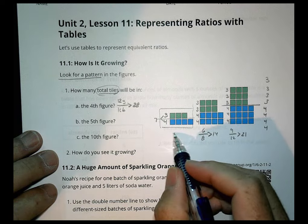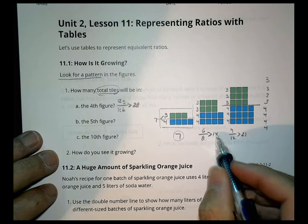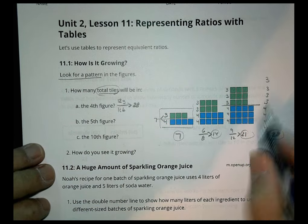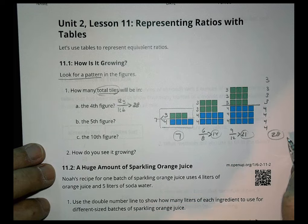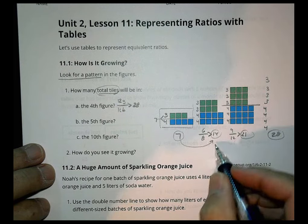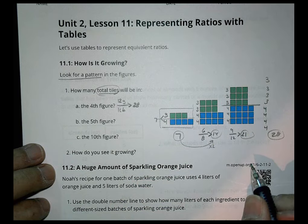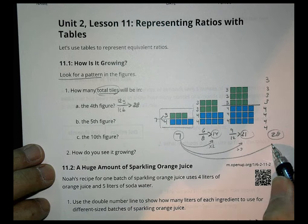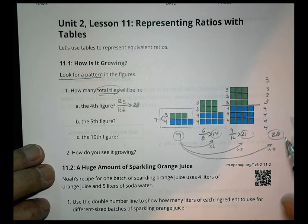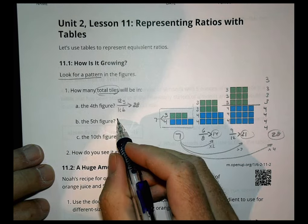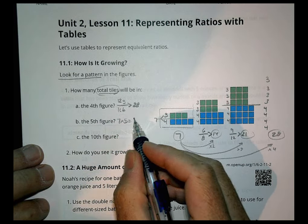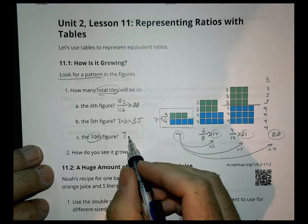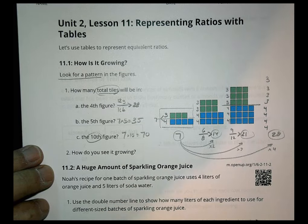Now if we look at the total tiles, what do we notice? We have seven, fourteen, twenty-one, and twenty-eight. For figure two it's seven multiplied by two; for figure three, seven times three; for figure four, seven times four. It's a pattern! So for the fifth figure, I could simply do seven times five and recognize there are going to be thirty-five total tiles. For the tenth figure, seven times ten gives a total of seventy tiles.